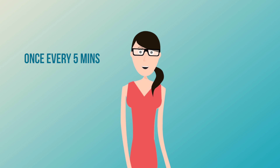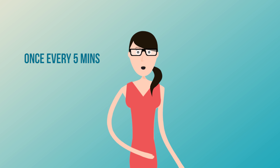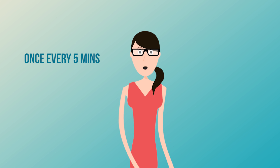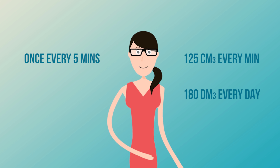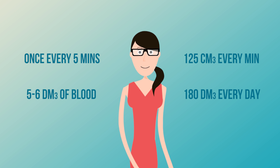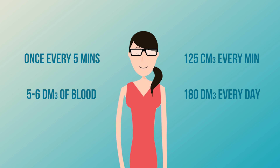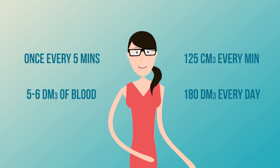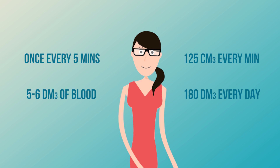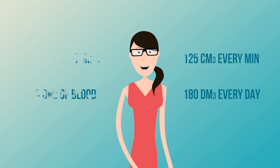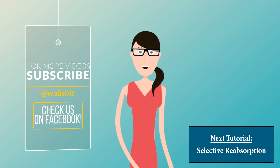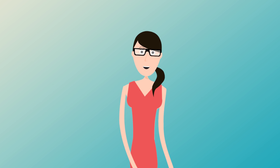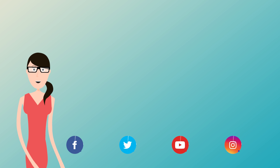In humans, blood flow to the kidneys is so high that all the blood passes through the kidneys about once every five minutes. Efficient ultrafiltration produces approximately 125 cm³ of glomerular filtrate every minute — that's 180 dm³ per day — considering a typical adult has about 5 to 6 dm³ of blood. If all of this filtrate were allowed to leave the body, severe dehydration would occur. So the rest of the nephron is concerned with reabsorption of essential solutes and return of about 99% of the water, so that eventually only about 1 cm³ of urine is produced per minute.